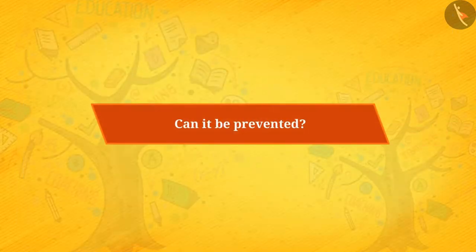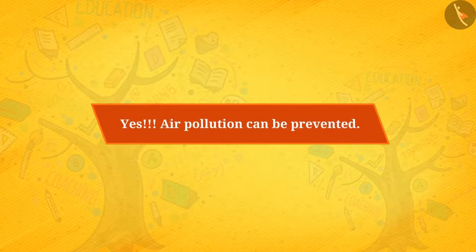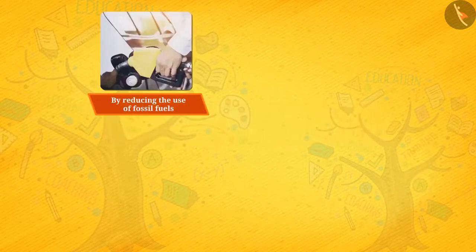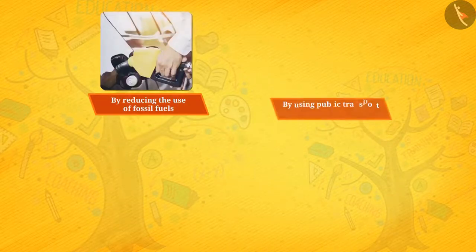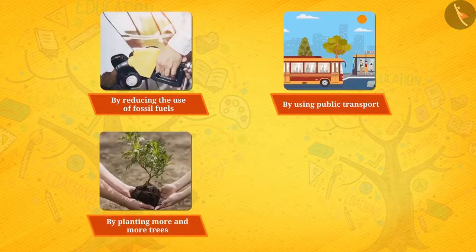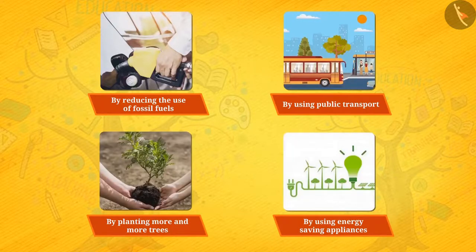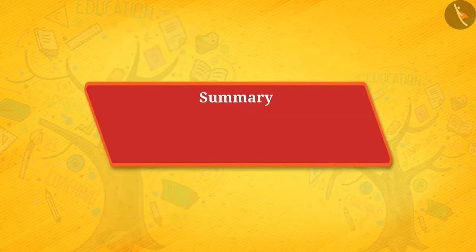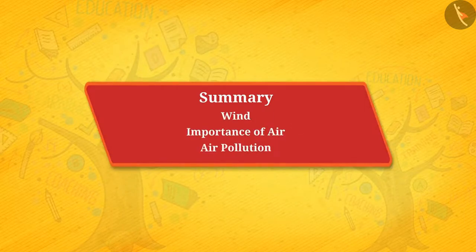But can it be prevented? Yes, air pollution can be prevented. By reducing the use of fossil fuels, by using public transport, by planting more and more trees, and by using energy-saving appliances, we can prevent air pollution. So what did you learn in this video? The importance of air and air pollution.